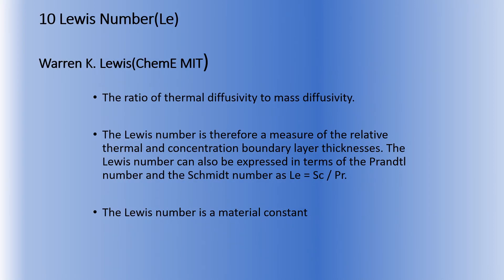Number ten is the Lewis number, denoted by Le. It is defined as the ratio of thermal diffusivity to mass diffusivity. The Lewis number is a measure of the relative thermal and concentration boundary layer thicknesses. It can also be expressed in terms of the Prandtl and Schmidt numbers — specifically as the ratio of the Schmidt number to the Prandtl number. It is used in heat and mass transfer calculations and is a material constant.